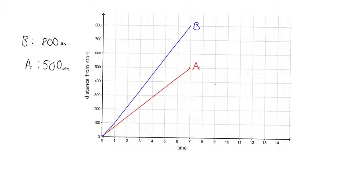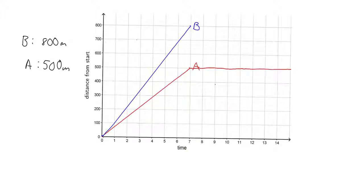Let's have a look at what it would look like if they stopped. If we carried on mapping what happened to A and A had stopped at 500 meters and didn't move on from there for a long time, you can see that they would stay at exactly 500 meters — a horizontal line. That horizontal line would tell you they're basically standing still: not going forward and not going back towards the start.